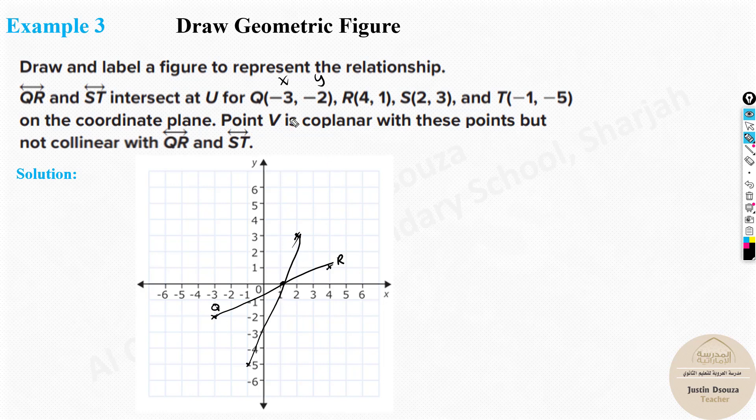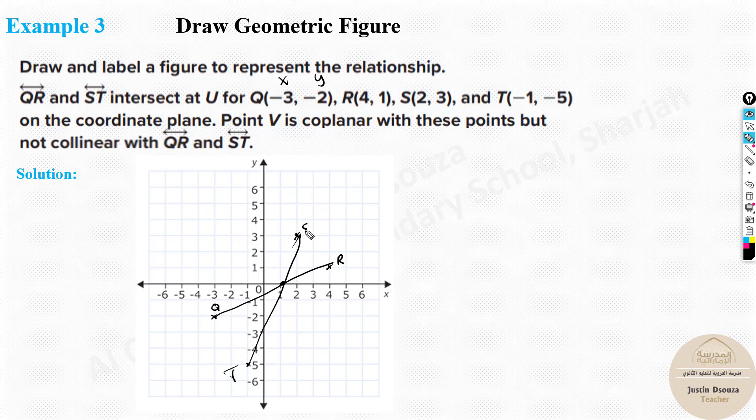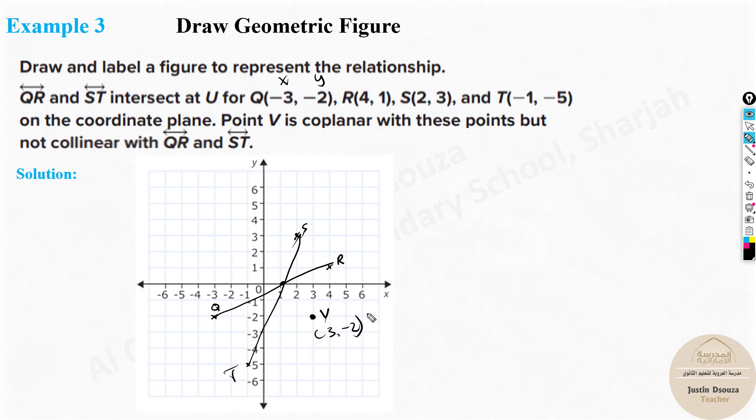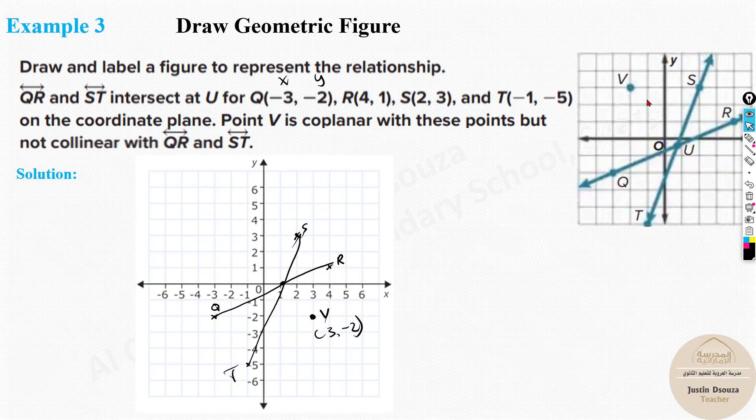Now there is one more thing. There is a point V which is coplanar. It's in the same coordinate plane, but it is not collinear. So it can't be anywhere. See, this is T, this is S. It can't be on this line or this line. You can choose anywhere, literally anywhere, and that can be the sample answer. I will choose over here. This is V. It is X is 3 comma minus 2. This is a point V. That's more than enough. Now you can see the real answer. Here they have chosen here. It's fine. As long as it's in the same plane and it is not in any line. I mean, it's not collinear. It's fine.